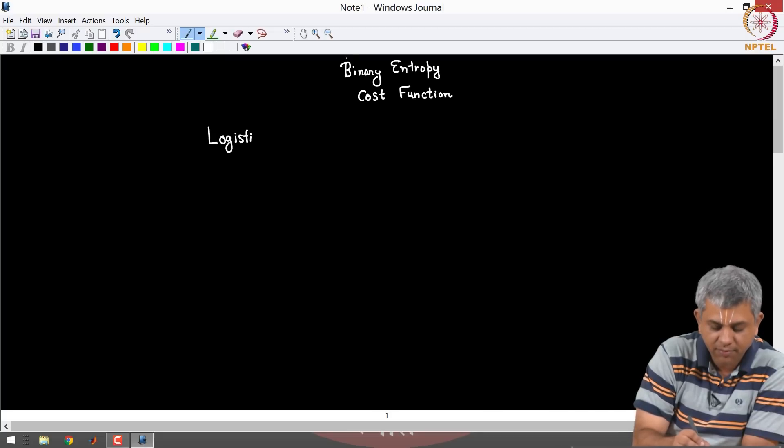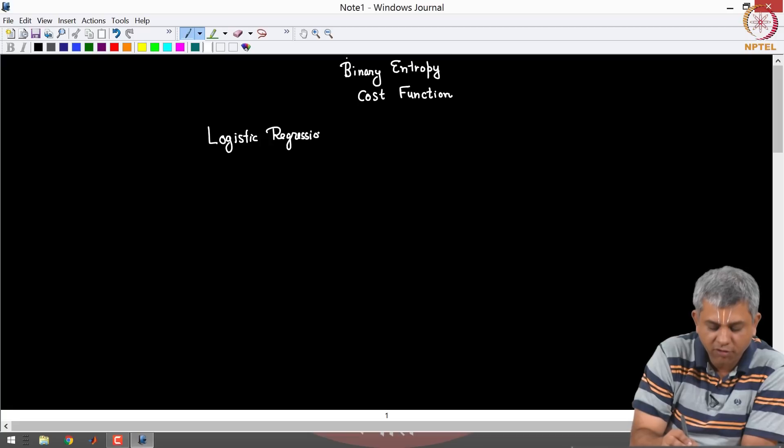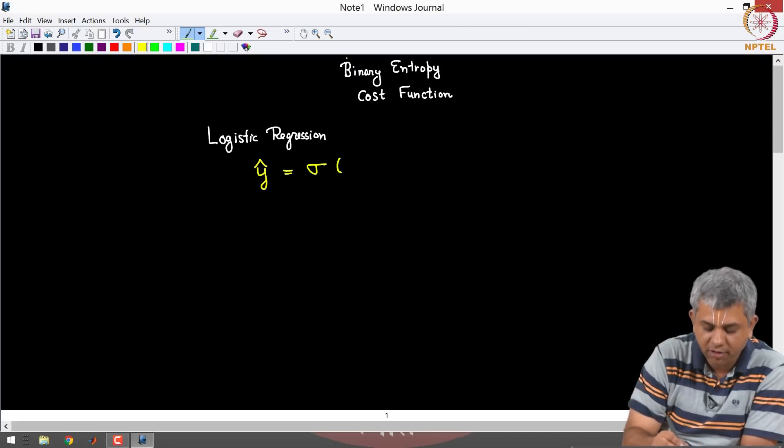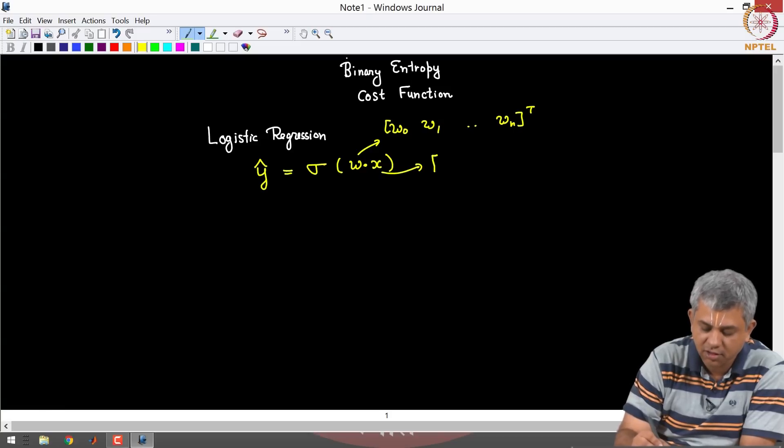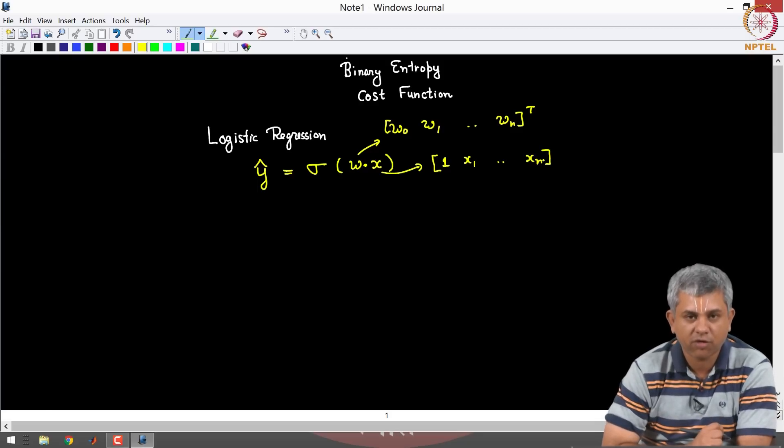We call that the forward model was Y hat equal to sigmoid of W dot X, where W includes W naught, so W naught W1 up till Wn if you have n features, and X here is 1, X1 up till Xn. So this was our forward model.